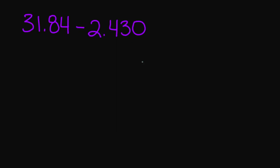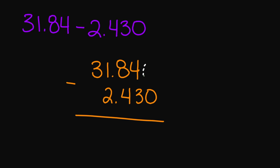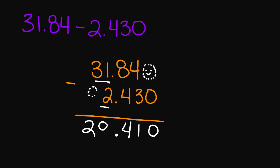Let's try 31.84 minus 2.430. Let's go ahead and line up our numbers and our decimal point. I'm going to fill in this hole with an imaginary zero. 0 minus 0 is 0, 4 minus 3 is 1, 8 minus 4 is 4. Bring that decimal down. And then 31 minus 2 is going to be 29. So your final answer is 29.410.